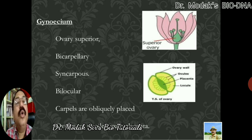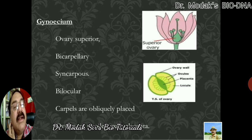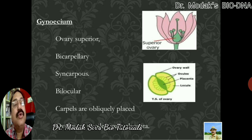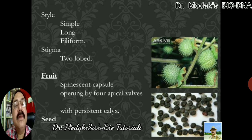If we talk about the gynoecium, the ovary is superior — it is present on the conical dome-shaped thalamus and all other floral whorls are below the ovary, therefore it is a superior ovary. It is bicarpellary — two carpels — but they are fused, and therefore in the transverse section the ovary appears bilocular. Another important feature of this family is that the carpels are obliquely placed. The ovules are swollen and show axile placentation, meaning ovules are produced from the axis. The style is simple, long, and filiform, with a capitate stigma.